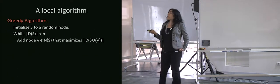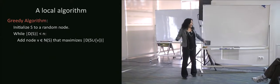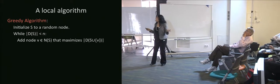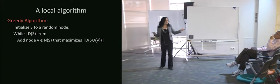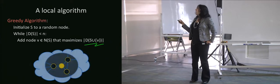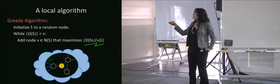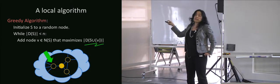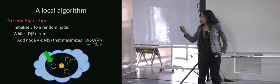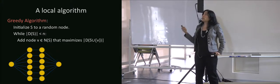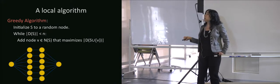Consider a greedy algorithm: initialize S to a random node; if you haven't yet covered the graph, add the node that maximizes the size of the set covered. The trouble is that greedy can go badly — if you pick an unlucky starting node, you go to a high-degree hub, and then everyone has two neighbors, so you get stuck and it takes a really long time. So pure greedy is not good.